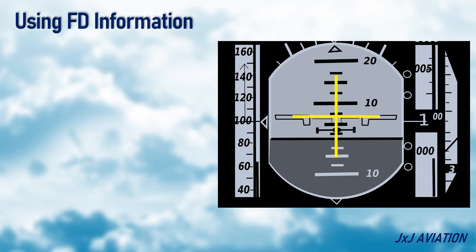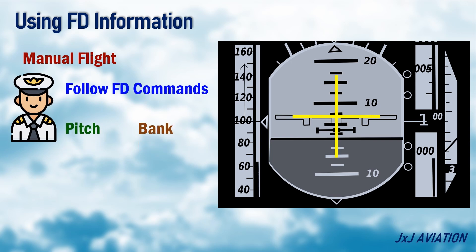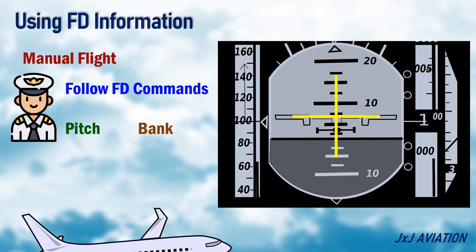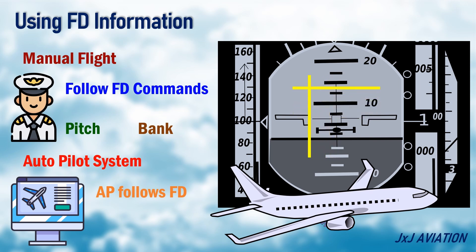When a pilot is manually flying the aircraft, the pilot must follow the flight director's commands for pitch and for bank. Modern aircraft which have an autopilot system, the autopilot follows the flight director's commands. This means the autopilot will fly the aircraft by sending signals to different control surfaces, as required by the flight director.